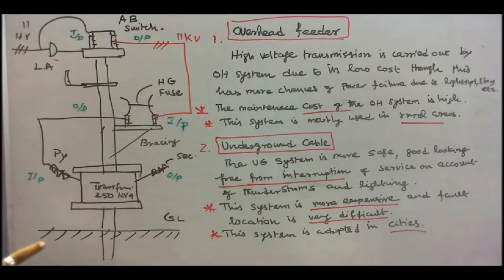Here, the neutral of the transformer is earth. All the metal parts are earth. The lightning arrestor is also earth. There are three earth pits.